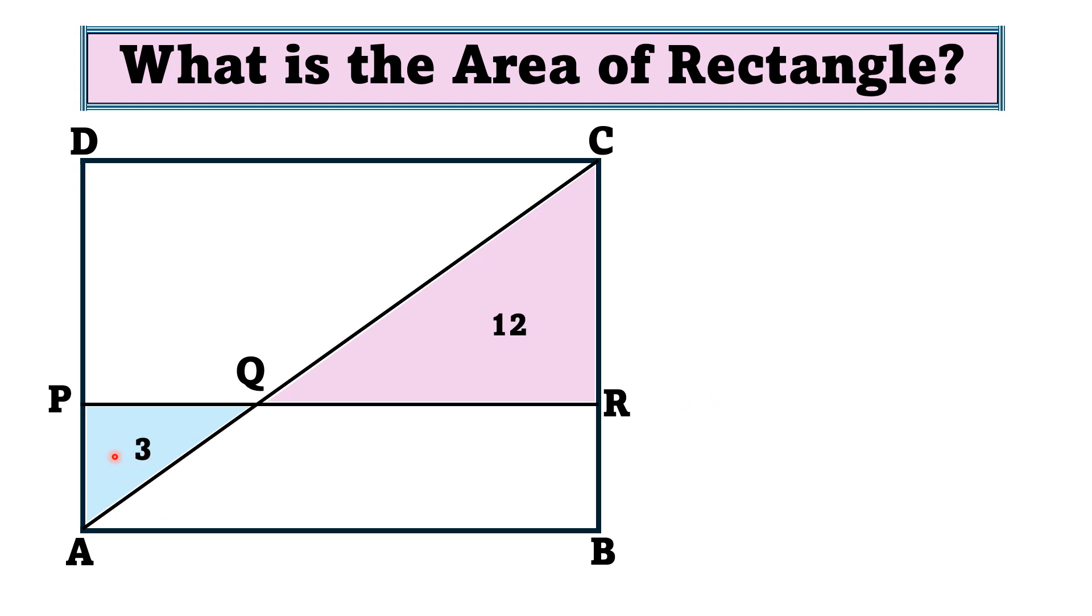Now, since these both are right triangles, in triangle APQ, the 90-degree angle is at point P, and in right triangle QRC, the 90-degree angle is at point R.